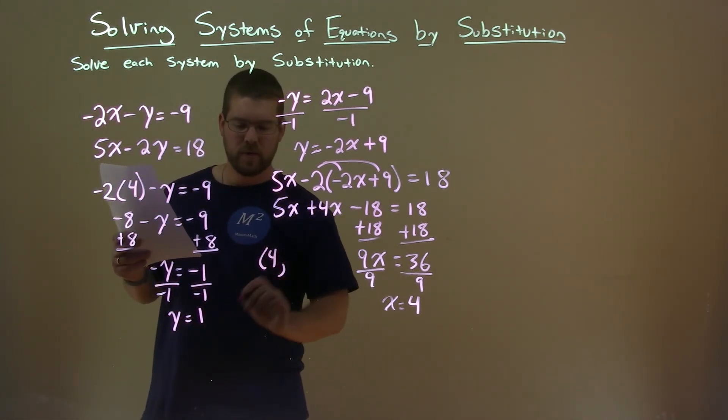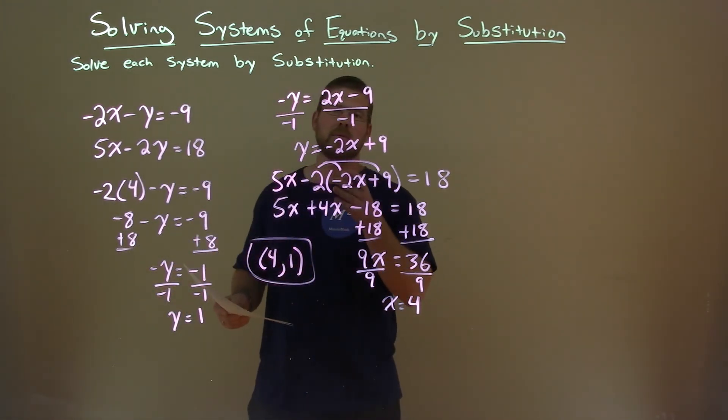Our x value is 4. Our y value is 1. And our final answer is the coordinate point, 4 comma 1.